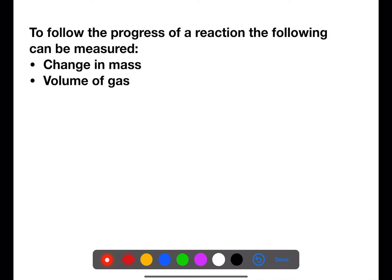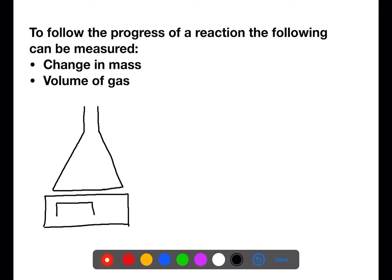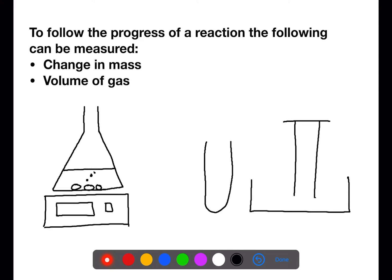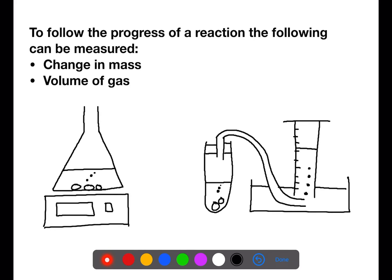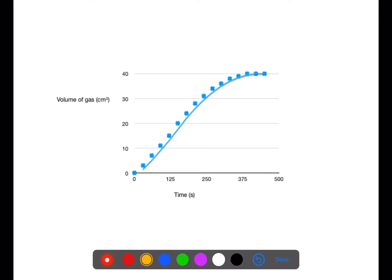There are different ways we can follow the progress of a reaction. One way is to measure the change in mass; we can also measure the volume of gas produced. To measure change in mass, we put the vessel with reactants onto a balance and measure the mass at given time intervals — any gas that escapes will be lost as mass. To measure the volume of gas, we trap it into water and into a measuring cylinder to measure the volume at different time intervals.